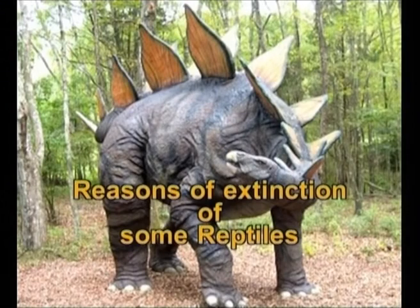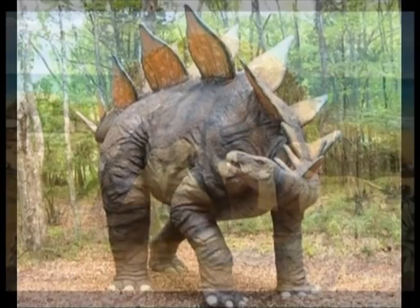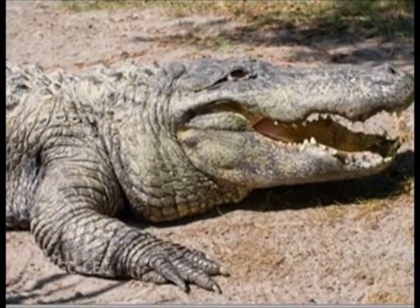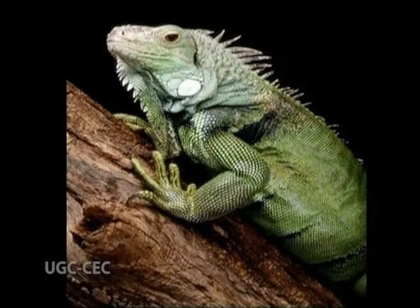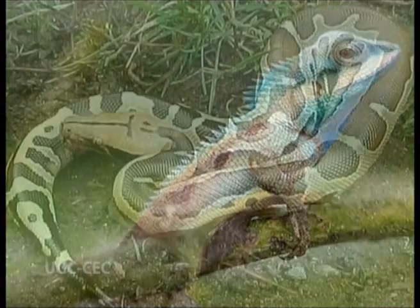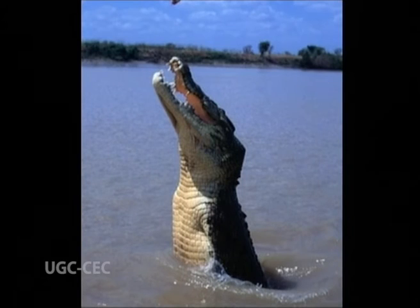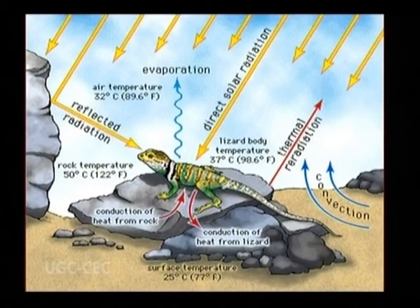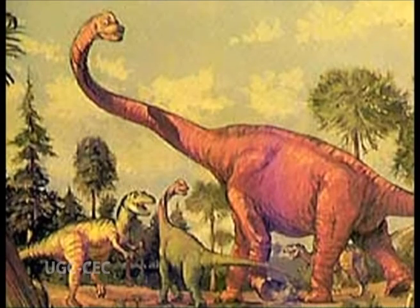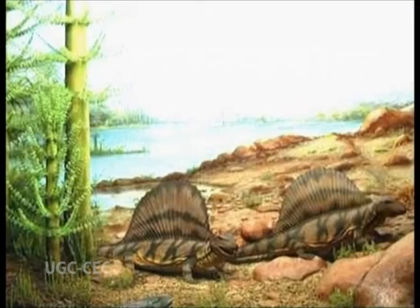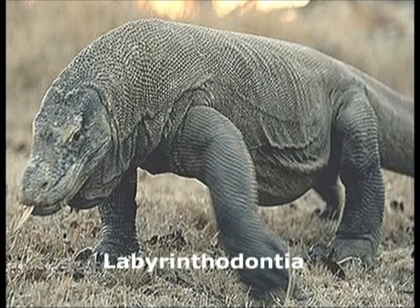Now let us understand the reasons for the extinction of some reptiles. The organization of reptiles is well suited to maintain life on land, showing considerable advance over amphibians. For example, the dryness of the skin, the method of reproduction, and the devices for economizing the use of water. The immense radiation of reptiles into every sort of land habitat during the Mesozoic period shows the efficiency of these mechanisms.